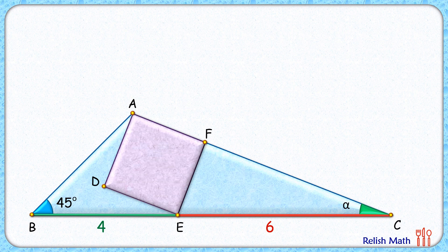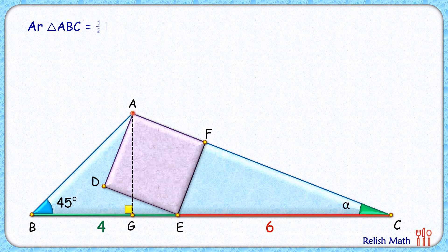We'll solve the same question in two different ways. For the first approach, we'll drop a perpendicular from point A on BC. The area of triangle ABC by formula is half of base BC times height AG. We know BC is 10 centimeters, so the question reduces to finding height AG. For that, let's join AE first.